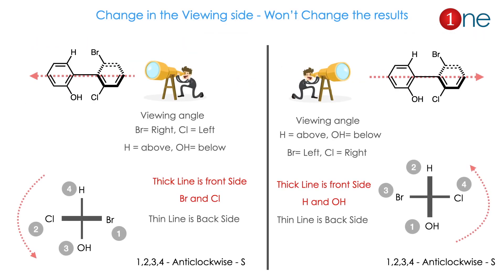We should know the fact that changing the viewing angle doesn't change the results for the same molecule. Here I give the same molecule viewed from different sides. The first one you are seeing from the bromine and chlorine side; the second one you are seeing from the hydrogen and OH side. The thicker line varies: first one chlorine and bromine get the thicker line, second one hydrogen and OH get the thicker line. But if you find the orientation, you will have anti-clockwise on both sides. So, changing the viewing angle won't change the results.